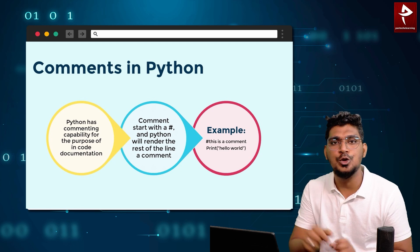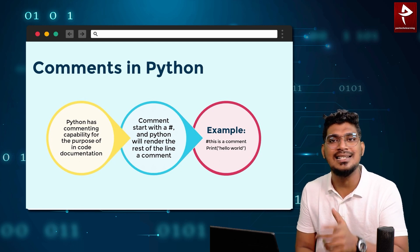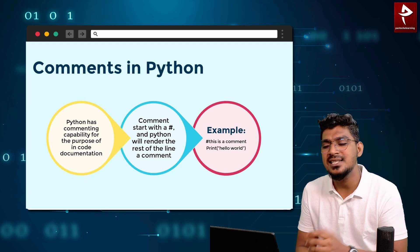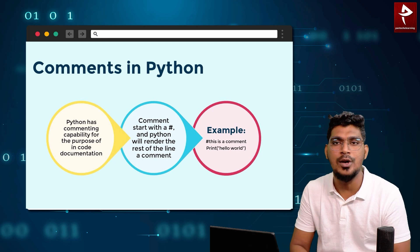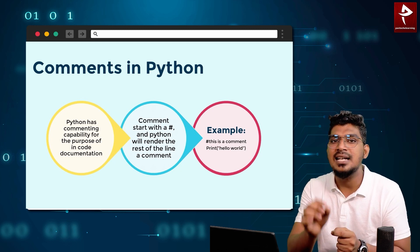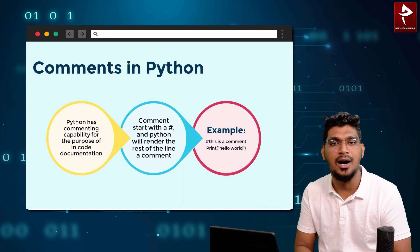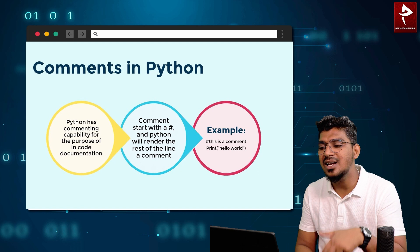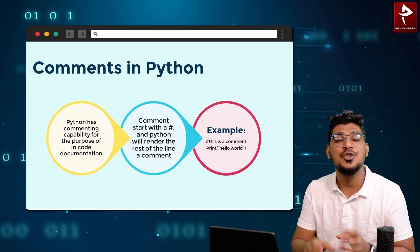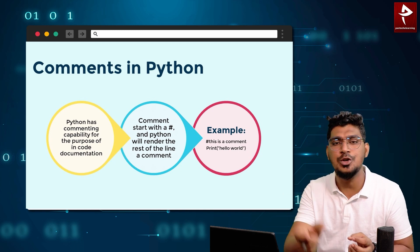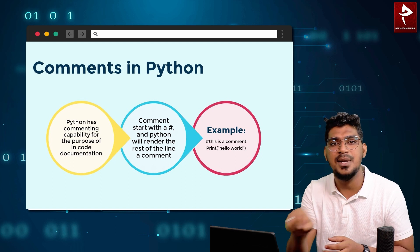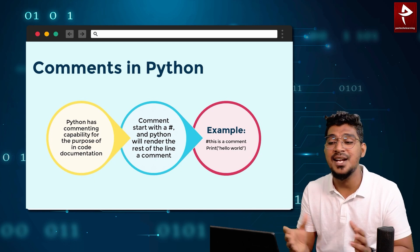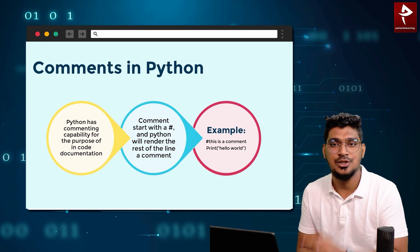If you use a hash symbol, that is the comment method. The code after the hash symbol is the comment. So what is the purpose of comments? If you don't want to execute a particular piece of code, you use a hash symbol to comment it out, and that code will not execute. That is the main purpose of comments in Python.